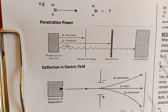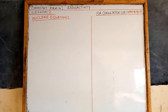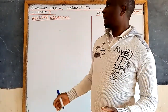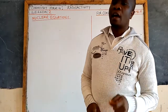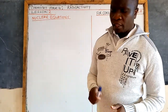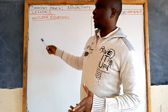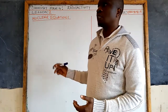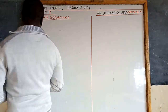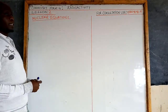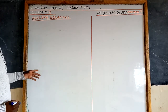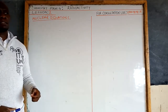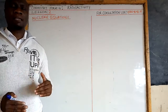Now let's consider the representations in nuclear equations. Nuclear equations, just like chemical equations, need balancing. However, we don't need state symbols. Unlike chemical equations where the number of atoms on the left equals those on the right, in nuclear equations new elements are formed on the product side.